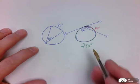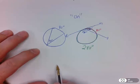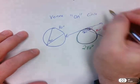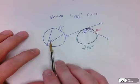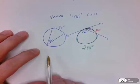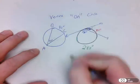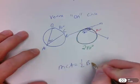So this is what I would like to call where the vertex is on the circle. Vertex on circle. And both relationships are the same. The measure of the angle is exactly half the measure of the arc. So if you want to give it letters, let's say A, B, C, the measure of angle A would be exactly one half the measure of arc BC.